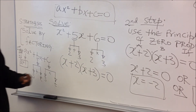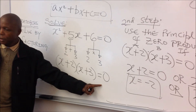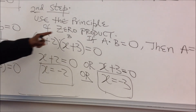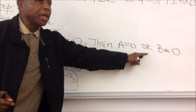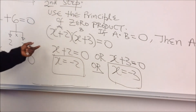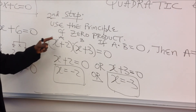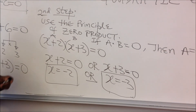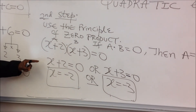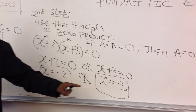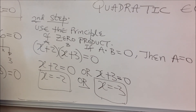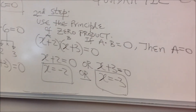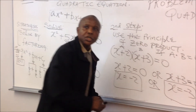Take 2 and connect it with x, take 3 and connect it with x, and form the product: x plus 2 times x plus 3 equals 0. Using the principle of zero product — if a times b equals 0, then a equals 0 or b equals 0 — we get x plus 2 equals 0 or x plus 3 equals 0, giving us x equals negative 2 or x equals negative 3 as the final solution.